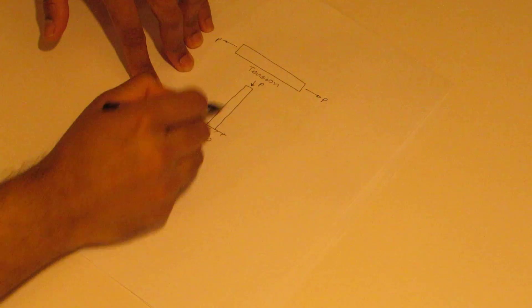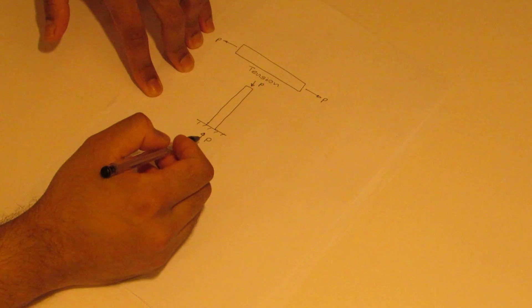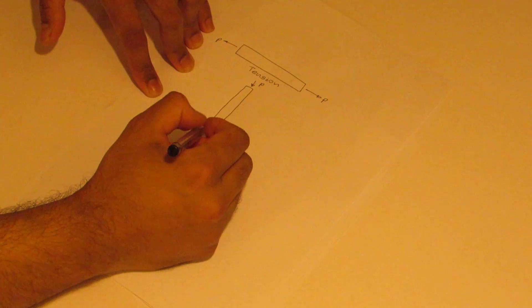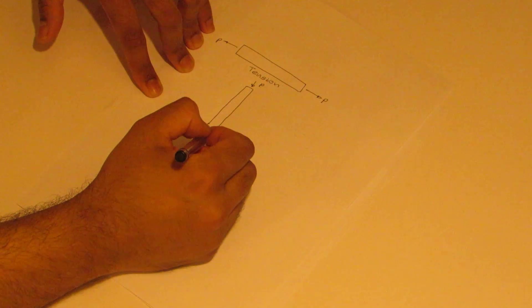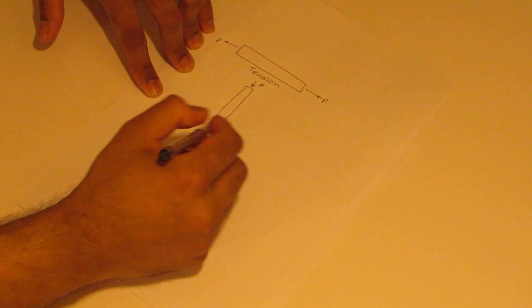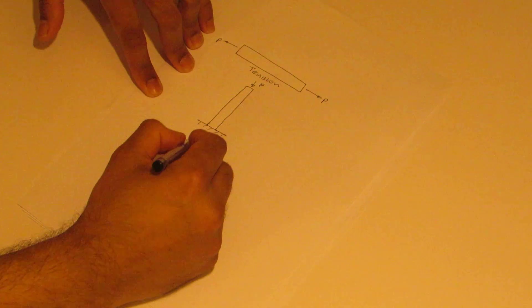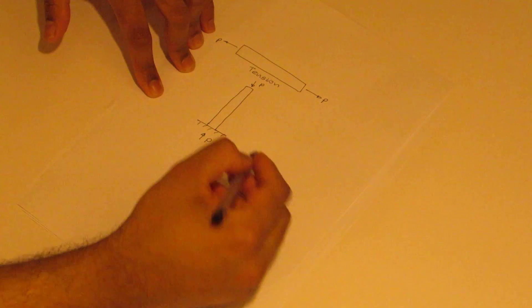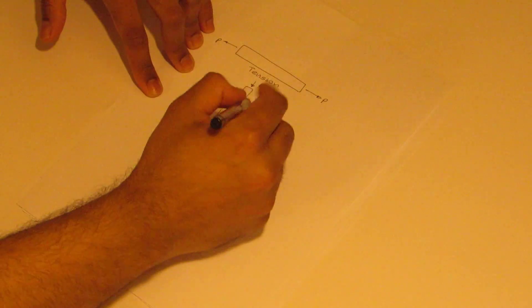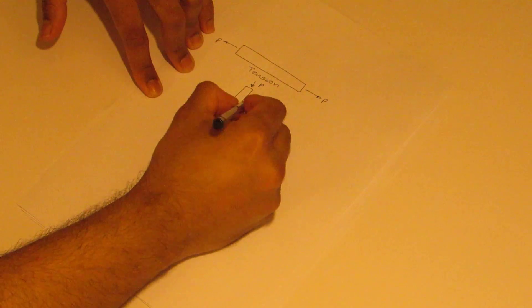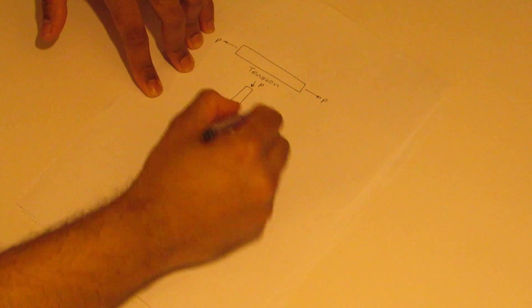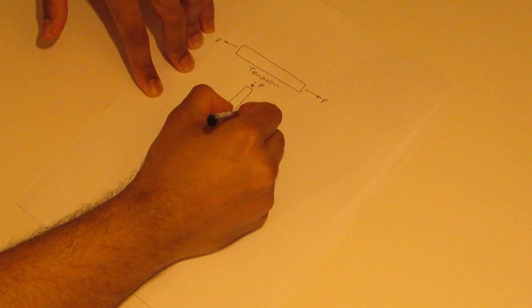And this section goes into compression, because this section tries to work against the force we are applying in this direction. So basically this concrete column is in compression.